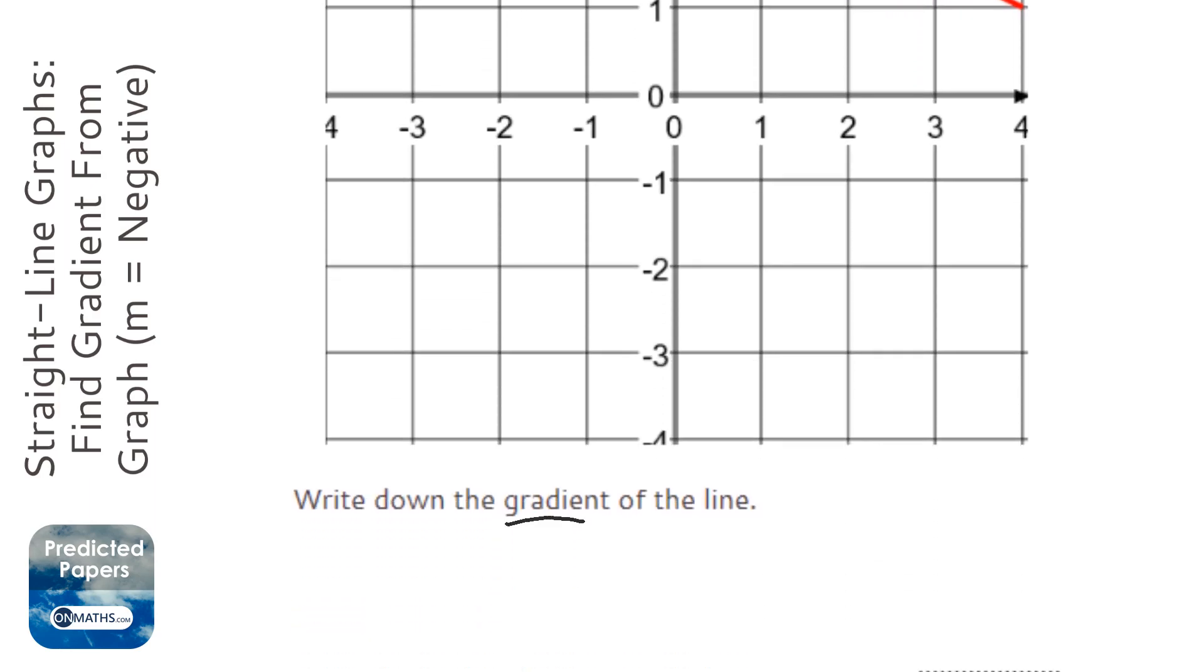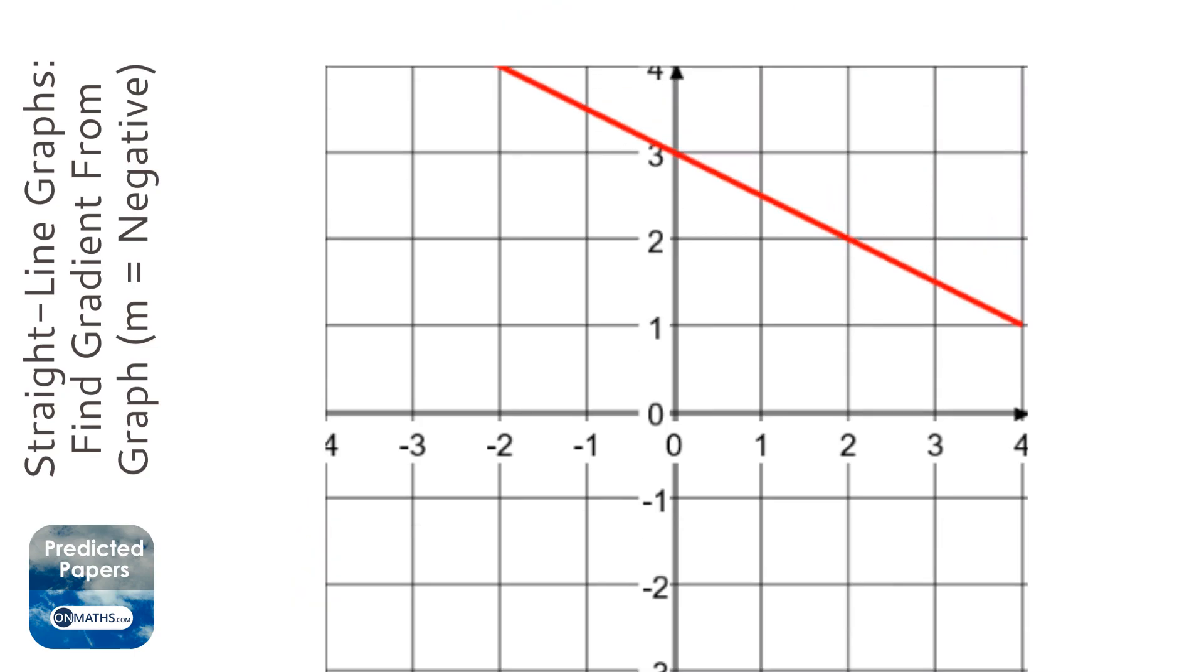OK, so in this question we are asked to find the gradient of the line, and to do that we first of all need to find out two points that we know.